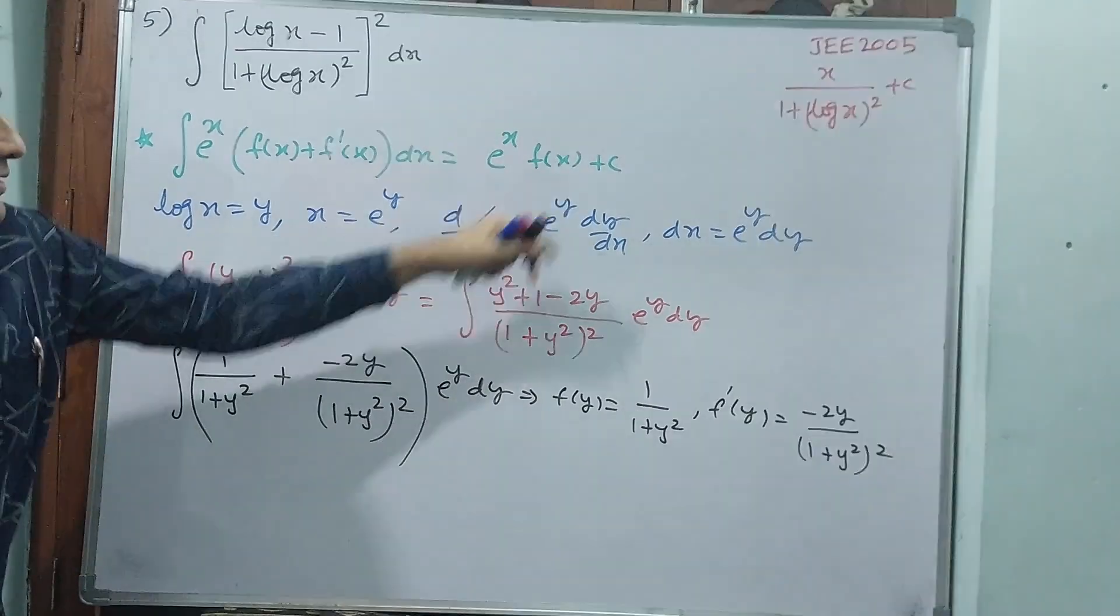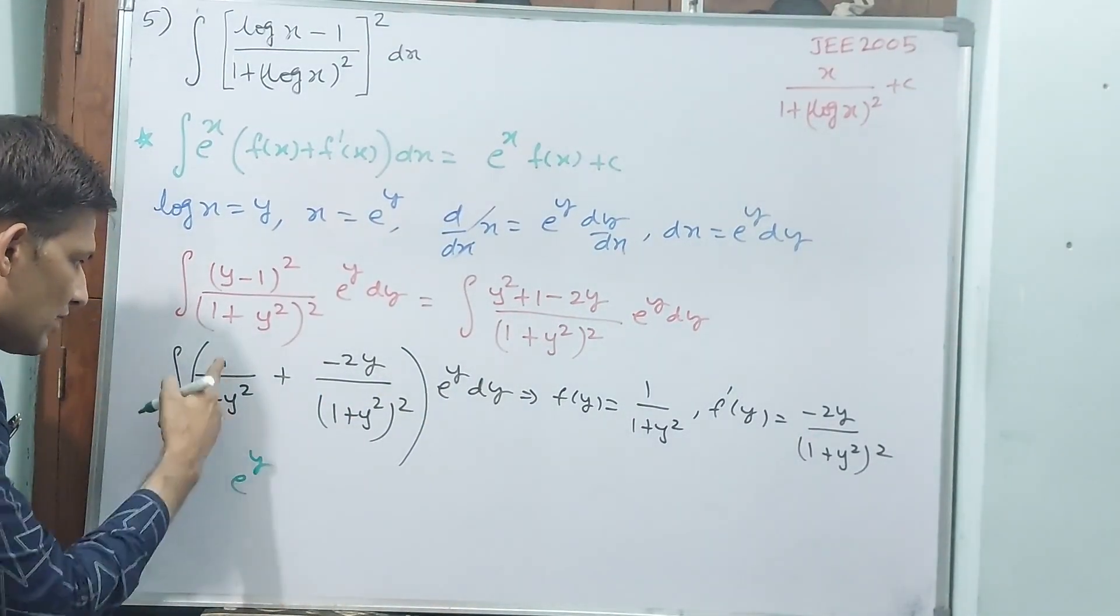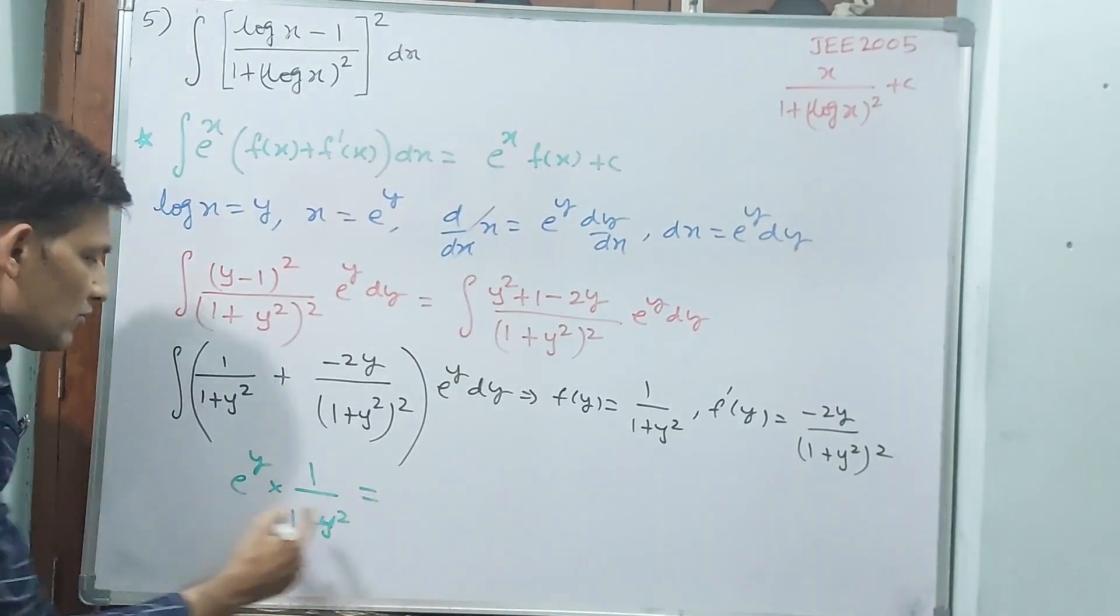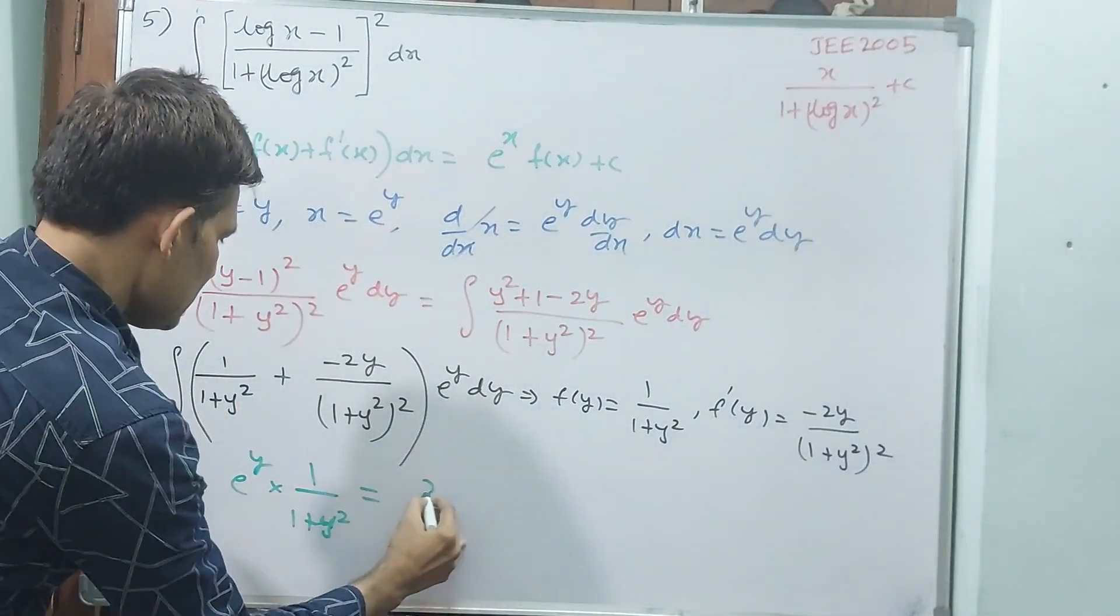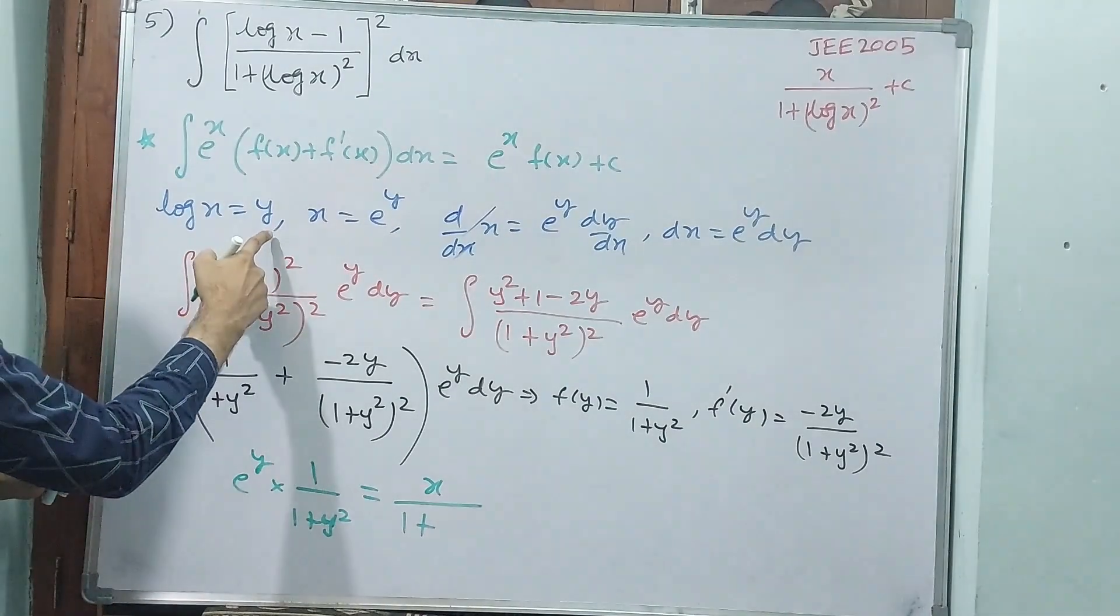Then you write e power x into f of x. e power y into f of y means e power y times 1 by 1 plus y square. That is equal to e power y, what you can write? x by 1 plus y square.